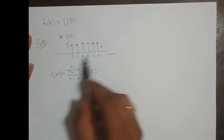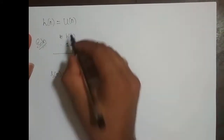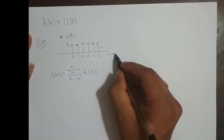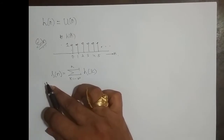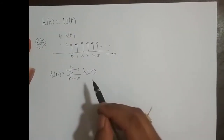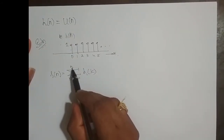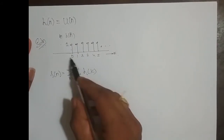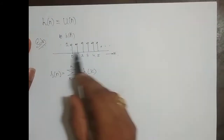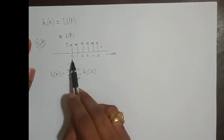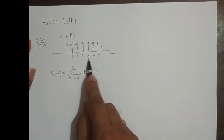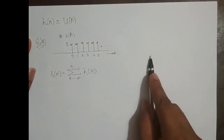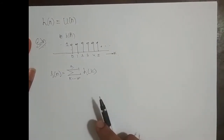Since in the formula we have the impulse response in terms of k as the independent variable, I will change h of n to h of k — just replace n by k. Now what is this n? This n is a slider. I can give any value to this n depending upon the impulse response. I can give n the value 0, 1, 2, 3, 4, or up to 100, till infinity.